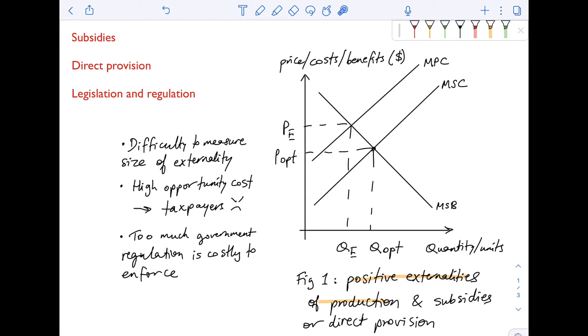So when it comes to positive externalities of production, the government can use subsidies to correct these positive externalities, direct provision, or legislation and regulation, or a combination of all three.